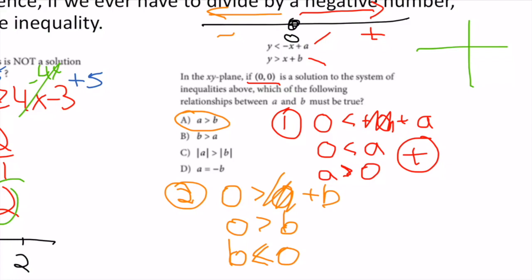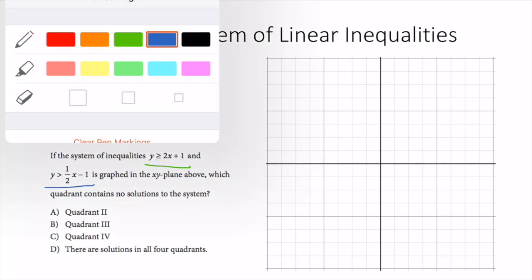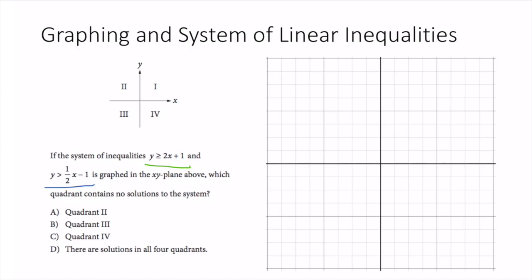A little bit tricky, but the first thing to do is plug in the solution they give you. Now, graphing a system of inequalities: I'll do the green one and then the blue one. I'll treat these exactly like linear equations — graphing y > 2x + 1 as if it were y = 2x + 1. Positive 1 is my starting point.